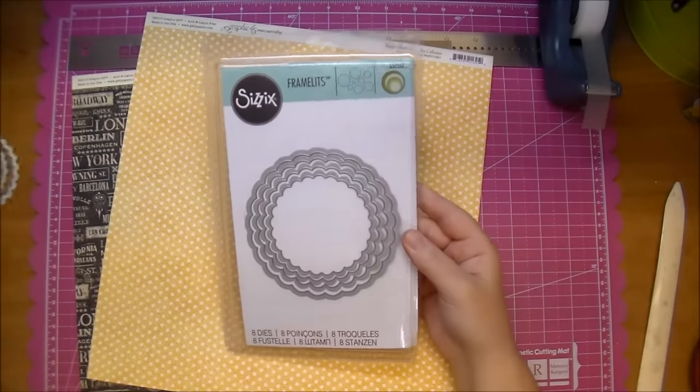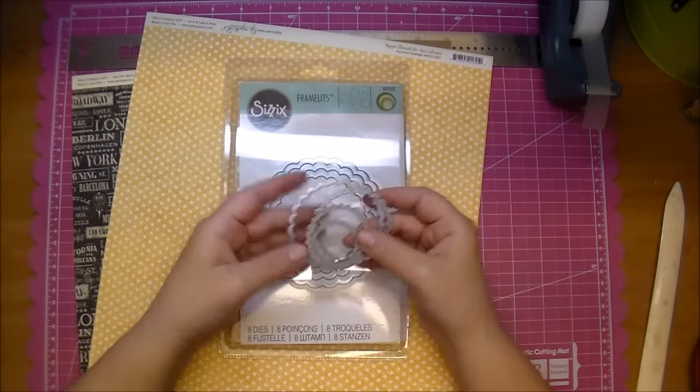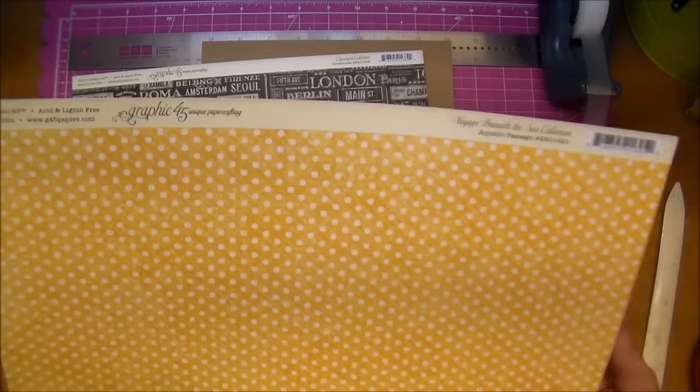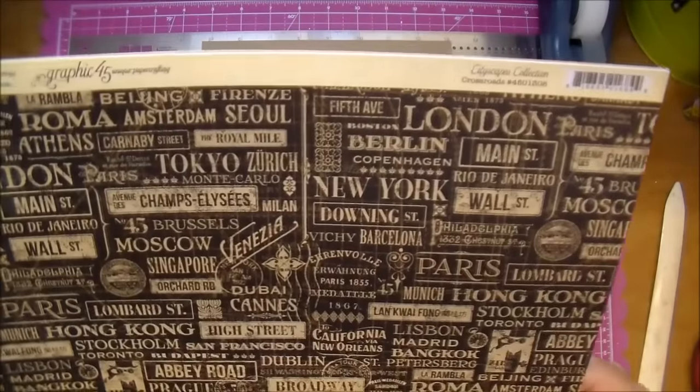I pulled out this Sizzix Framelits die. It's the Scallop Circles, and they have eight different size circles. I'm using the four smallest, and I did pull out this by the Sea Graphic 45, but I don't end up using that.